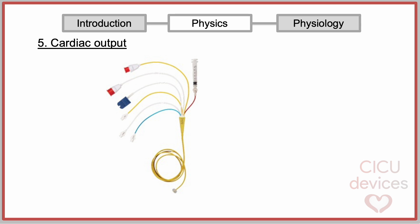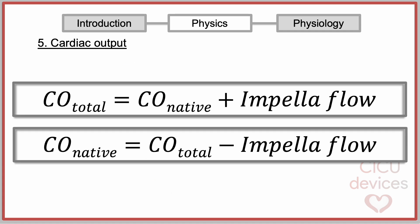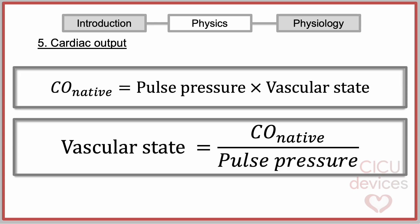Here's the step-by-step process. First, we need to obtain an initial measurement of cardiac output using a pulmonary artery catheter. Once we have obtained the total cardiac output value, we must calculate the native cardiac output by subtracting the Impella flow at that moment from the total cardiac output. With this data, we will be able to capture the value of vascular state.